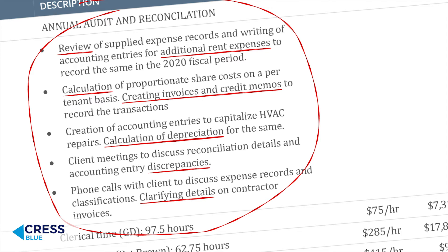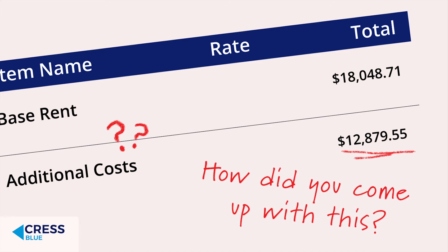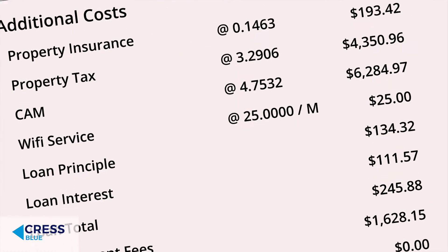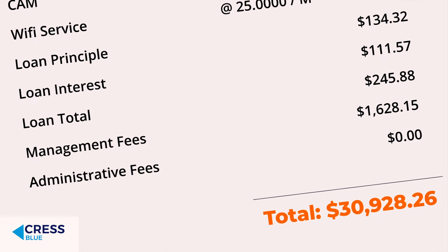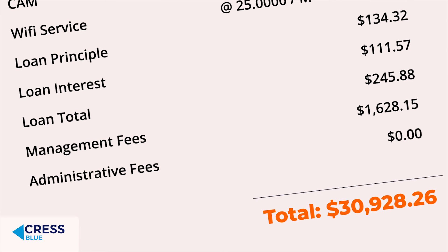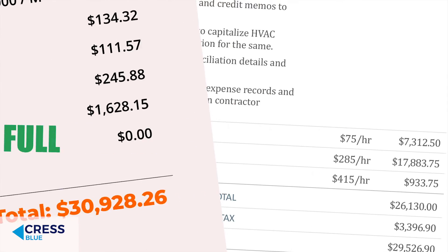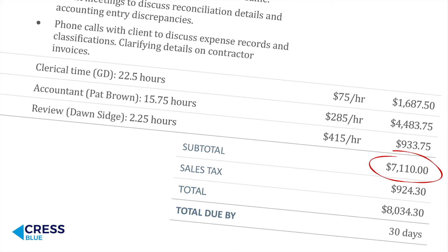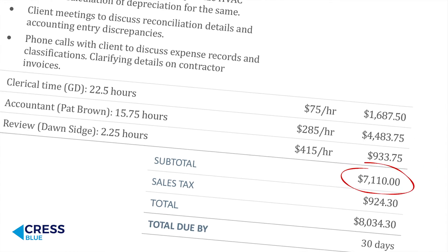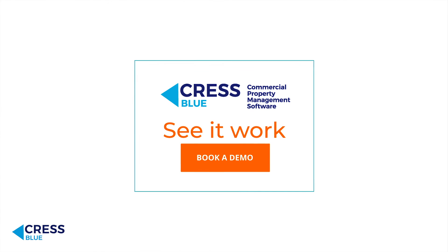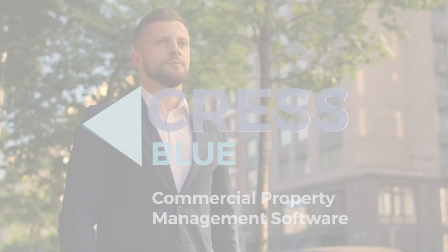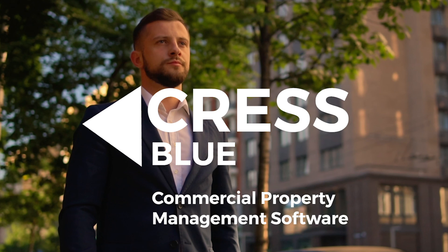Crest Blue automates all of this for you. Commercial net leasing becomes easy to administer. You can easily send out statements to tenants for each property, showing the period's expenses, taxes, the tenant installment payments, and the shortfall or overpayment. A transparent audit trail is ready in case a tenant or official body appeals the charges and calculations. Year-end reconciliations are much less costly. Crest Blue is an affordable, sophisticated software that allows you to better handle complex calculations and record keeping. Book a demo for a guided tour through the automated time-saving features. It's time to manage your leases with unbeatable efficiency and accuracy.